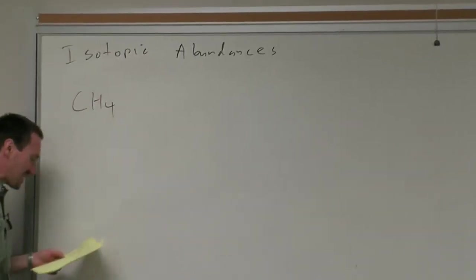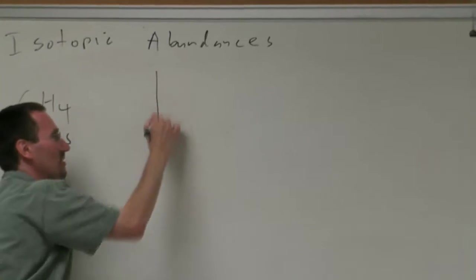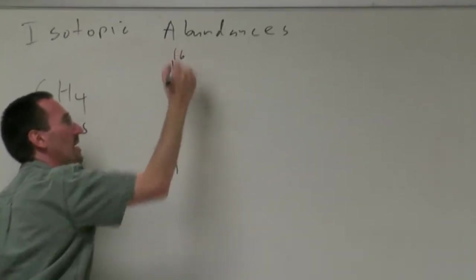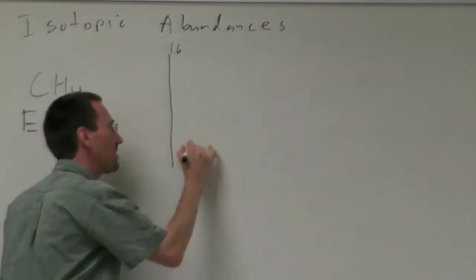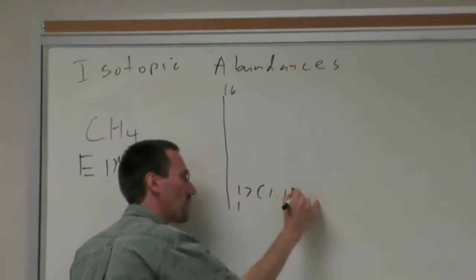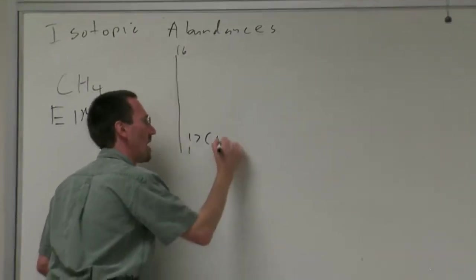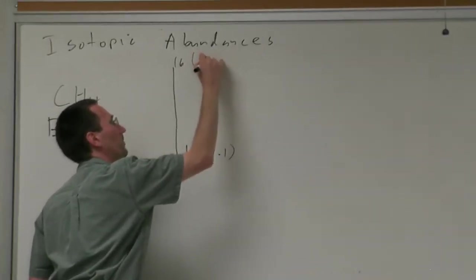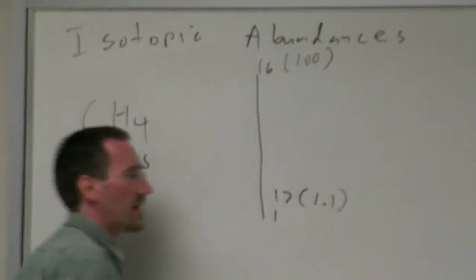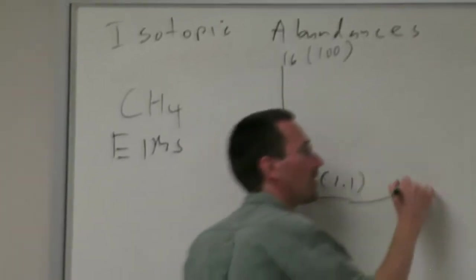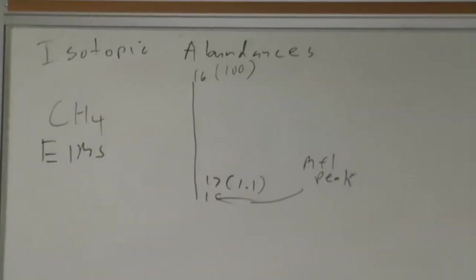It just takes a moment to wrap your head around this. If for example I take methane and sketch out an EI mass spec of it, you'll see a line at 16 and then a second line at 17 that will be 1.1 percent. I'll give the relative intensities as 100 and 1.1.